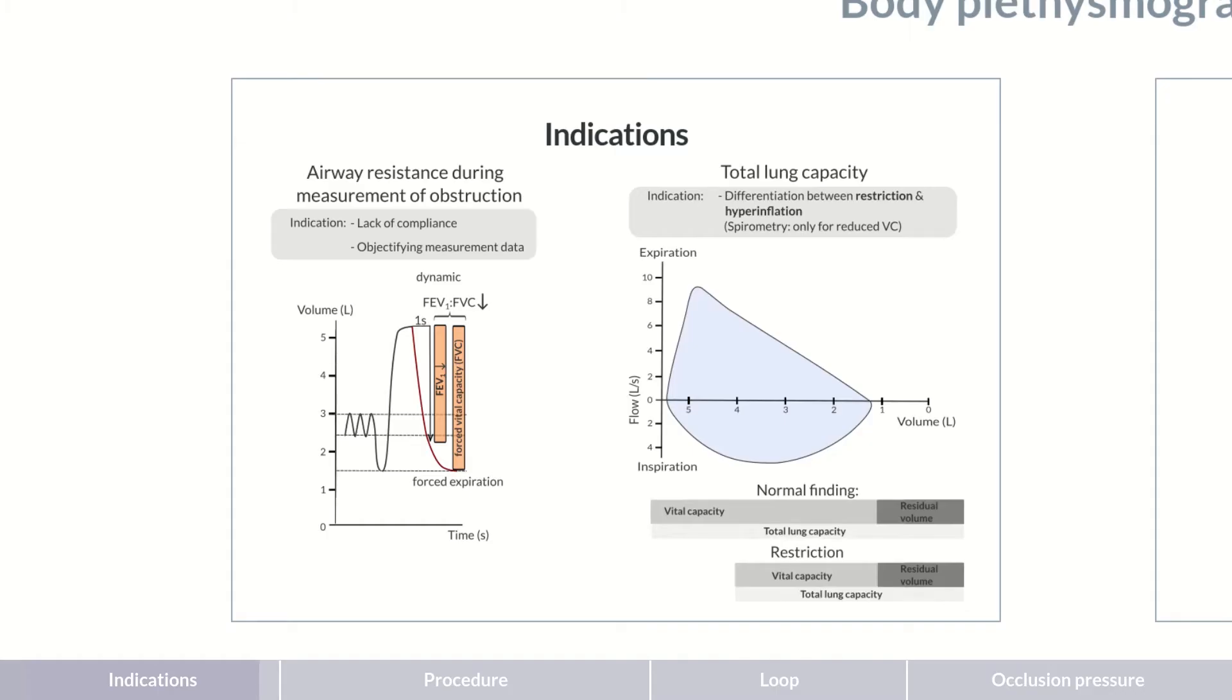In contrast, in lung hyperinflation, the vital capacity is reduced as the residual volume is increased at the expense of the vital capacity. The total lung capacity isn't reduced.